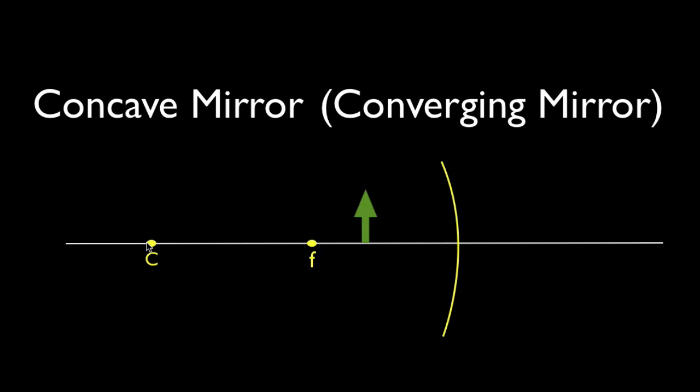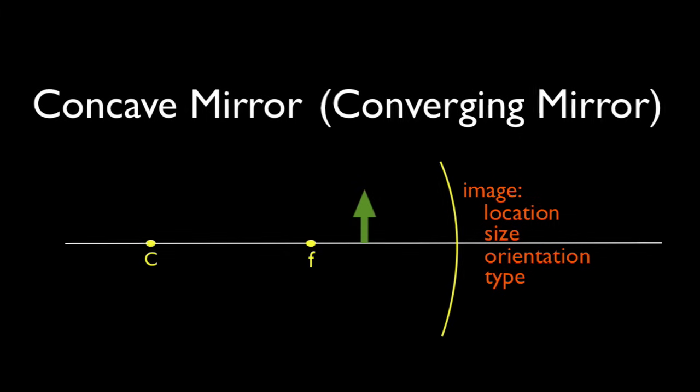Before you even draw the ray diagram, after a little practice, you should be able to describe the image. Then you can draw the ray diagram to confirm what you know. You should be able to say something about the location of the image on the principal axis, the size of the image relative to the object, the orientation of the image, and the type of the image.